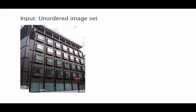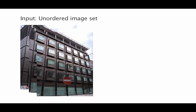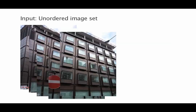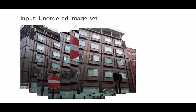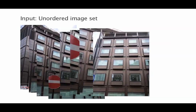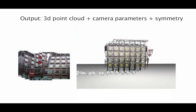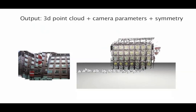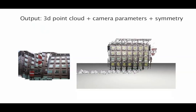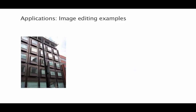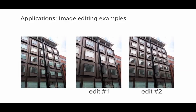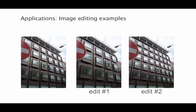Repetitions are commonplace in urban facades. Ambiguities arising from such widespread repetitions make it difficult to establish consistent correspondences across unorganised image collections. We present a simultaneous symmetry detection and structure-from-motion extraction framework for image-based facade modelling. The extracted information enables users to perform various image editing operations across multiple images.